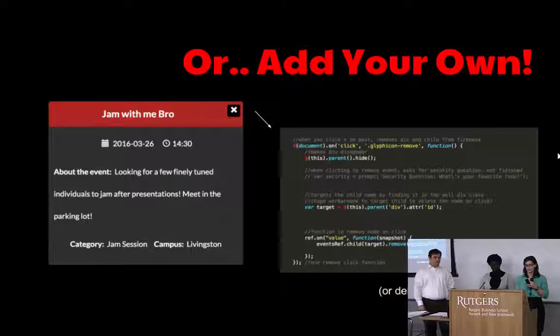when you click remove, it targets the event name, goes to Firebase, finds the event name, which is the child name, and deletes it.